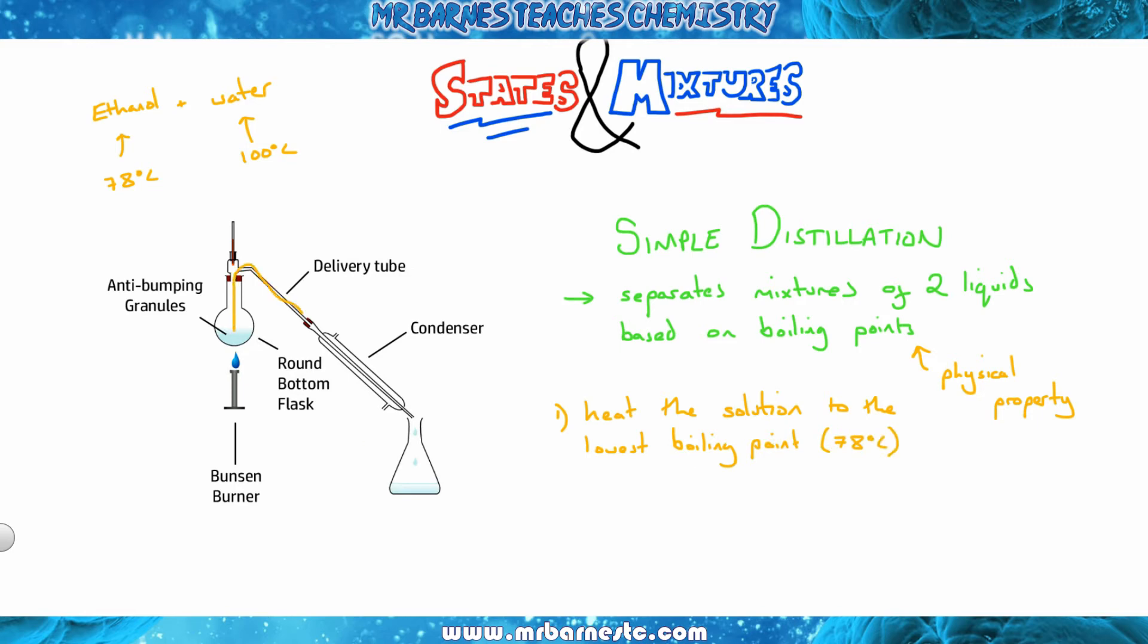At that point, my ethanol is going to evaporate, turn into a gas, and move up through the delivery tube and into my condenser. In the condenser it will condense, so it will turn back down into a liquid. That condenser is surrounded by cold water, which will turn it back into a liquid and it can be collected. You'll end up with your ethanol in your flask on the right and your water remaining behind in your round bottom flask on the left.